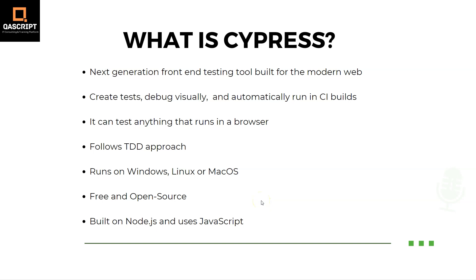Hey everyone, welcome to this brand new playlist on our channel on an automation tool which is known as Cypress. Now if you have not heard about Cypress, it is a next generation front end testing tool which is built for the modern web applications. It addresses some of the key pain points which are faced by developers and QA engineers while they test modern web applications.